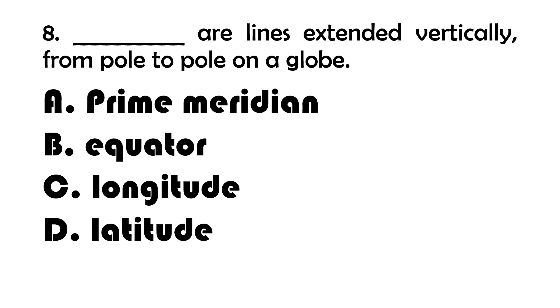Number 8. Blank are lines extended vertically from pole to pole on a globe. A. Prime meridian. B. Equator. C. Longitude.